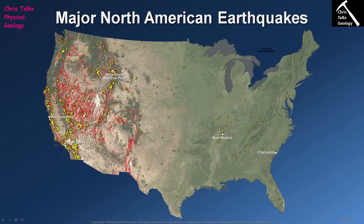Earthquake activity in the Cascade region also continued once the Laramide orogeny had finished. This area is still an ocean-continent convergent plate boundary — the Juan de Fuca plate, which is oceanic crust, is subducting underneath the North American plate. This leads to a string of volcanoes stretching from northern California through Oregon and Washington State and up into British Columbia. So the western side of the United States has been very seriously and very recently tectonically deformed and remains active today.